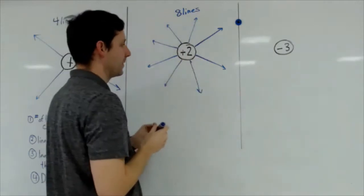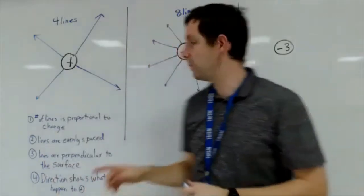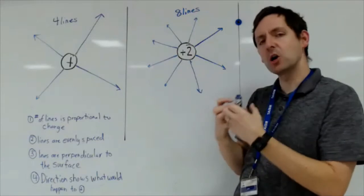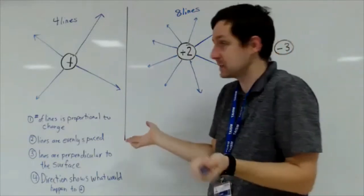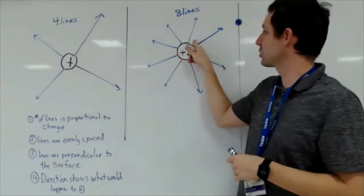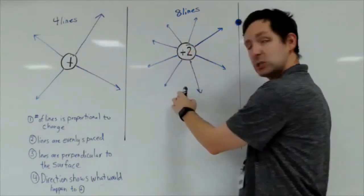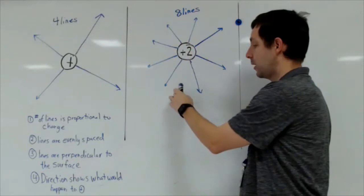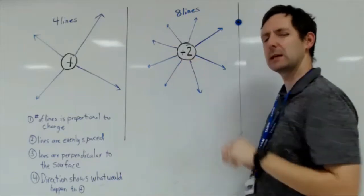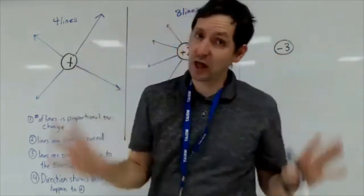When the lines are closer together it means the field is stronger. Being close to a positive two results in a stronger force than being next to a positive one. As the lines spread out farther from the charge, the field becomes weaker. We'll connect this to forces in the next video, but for now let's just visualize the field.